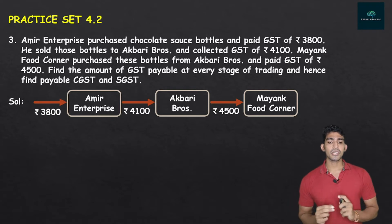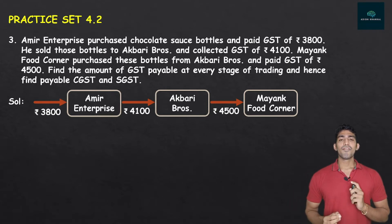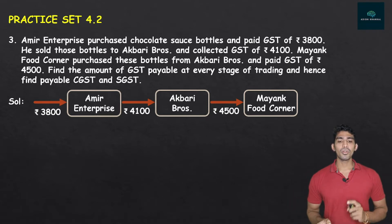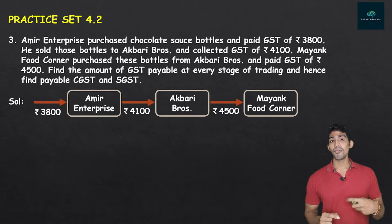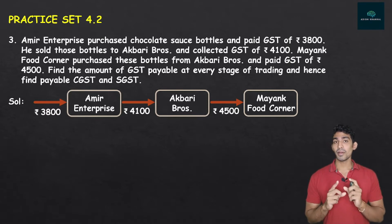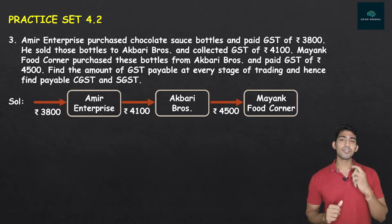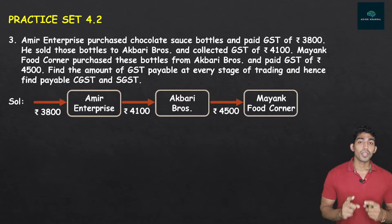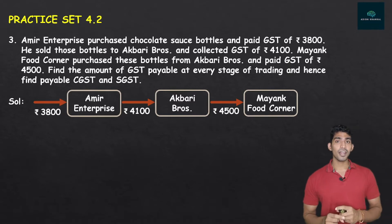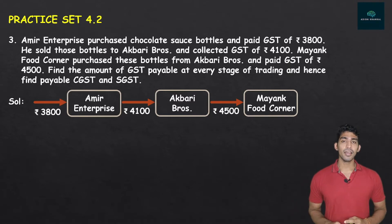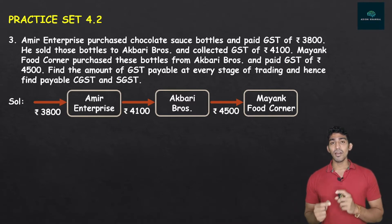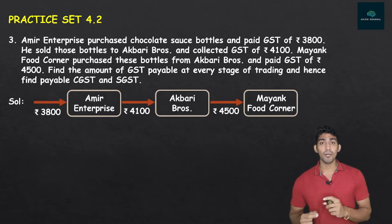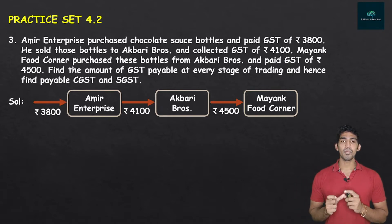The question says: find the amount of GST payable. GST Payable means we use the formula: output tax minus ITC. At every stage of trading means we need to find it for each entity one by one.